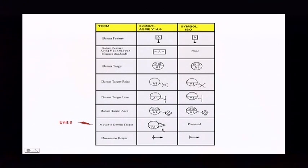And that right there, that's the movable datum target. That's one of the new symbols for 2009. If you want the datum target to move, they use this little bird beak on there called the movable datum target. We're going to cover that in unit 8.